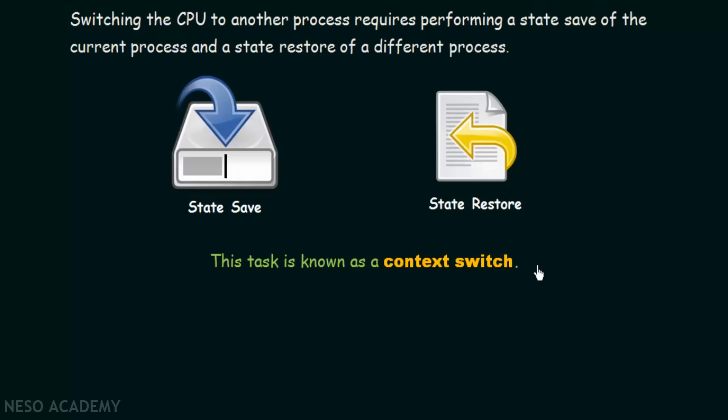When one process is executing, another process interrupts it and has to be executed first. The current process stops its execution, saves its context, and the interrupting process is executed. We are switching from one process to another, and the contexts of these two processes are handled in the CPU — one is saved and the other is restored.